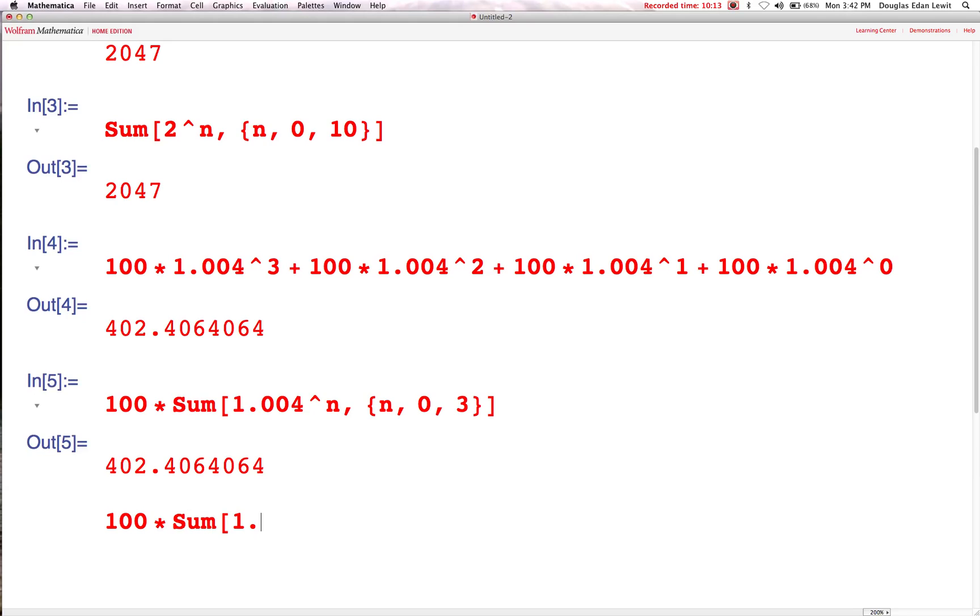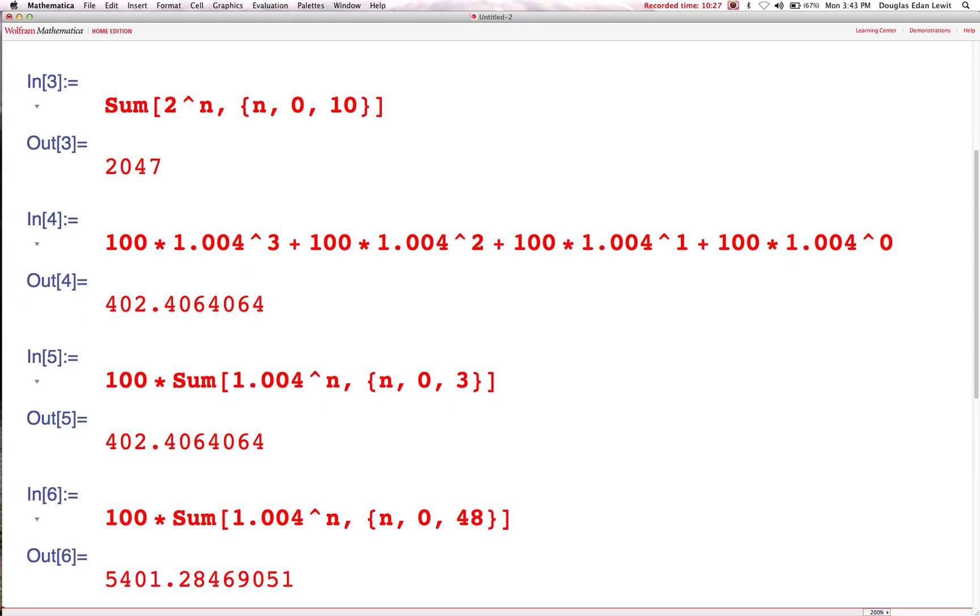So, we've got 100 times the sum of 1.004 to the power of n, and n is going to cover all the integers from 0 to 48. Wow, $5,401.28.